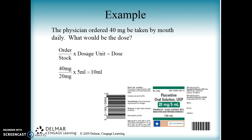Here is an example. We have an order — the doctor ordered 40 milligrams to be taken by mouth daily, and we want to know what the dose would be — so how much is taken every time they take it. That's what a dose is. When we use the formula method, we start with what the doctor ordered. That goes on top, so in this case the doctor ordered 40 milligrams.